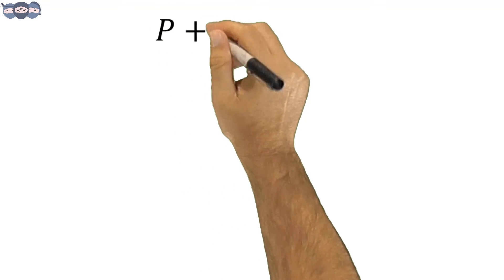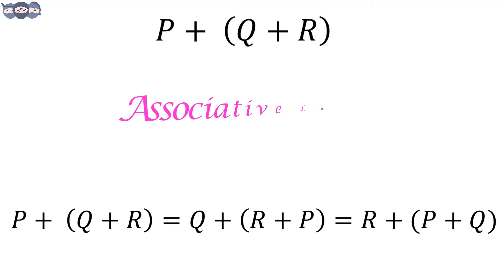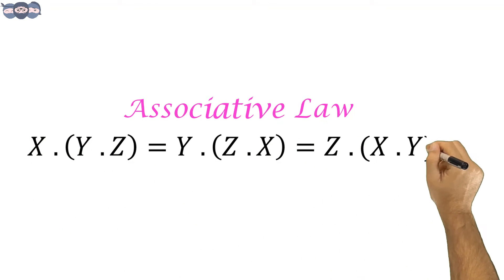Consider this logical expression. The order in which you solve the logical expression has no significance. All three terms are equal. This is called associative law. This law is also applicable for AND gate. So, X and Y and Z is same as Y and Z and X, which equals Z and X and Y.